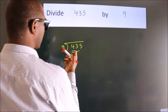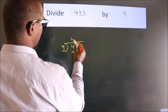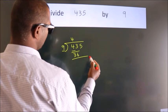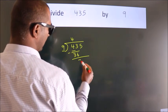A number close to 43 in the 9 table is 9 times 4 equals 36. Now we should subtract. We get 7.